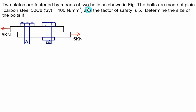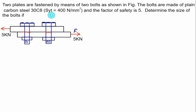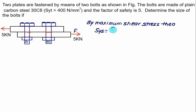Two plates are fastened by two bolts made of plain carbon steel 30C8, with Syt = 400 MPa and factor of safety = 5. Determine the bolt diameter. Both bolts fail by single shear. Since failure is by shear, we use SYS. According to maximum shear stress theory, SYS = Syt / 2 = 400 / 2 = 200 MPa.